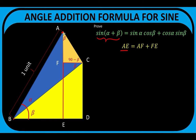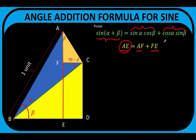From our figure, notice that the length of segment AE is the sum of the length of segment AF and segment FE. We already know that AE equals sine of alpha plus beta. If we can show that AF equals sine alpha cosine beta and FE equals cosine alpha sine beta, then we'll be able to prove this identity. That is now our goal: to show that AF equals sine alpha cosine beta and FE equals cosine alpha sine beta.